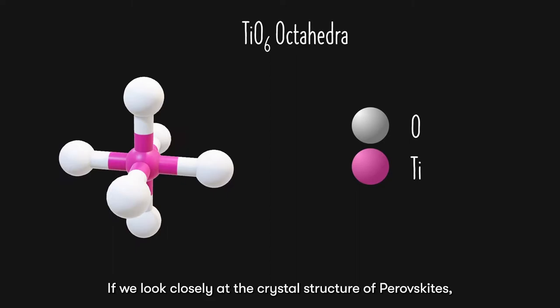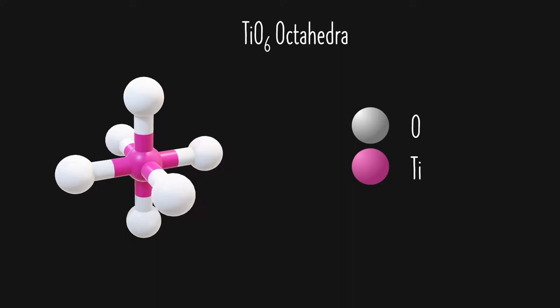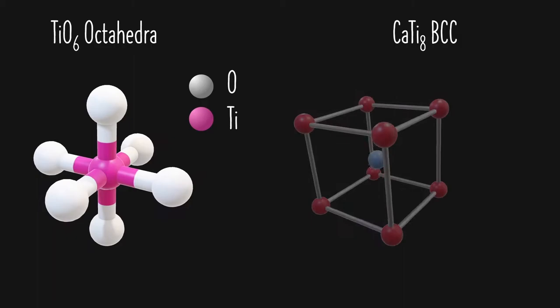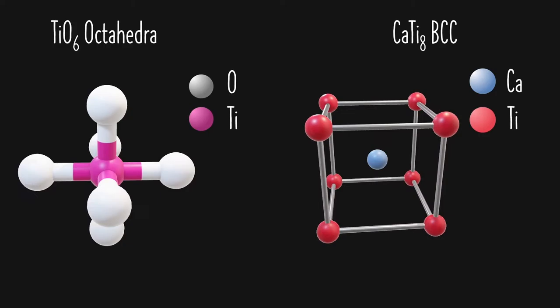If we look closely at the crystal structure of perovskites, we find that the titanium oxide forms an octahedral structure. In parallel, the calcium and titanium form a body-centered cubic geometry.